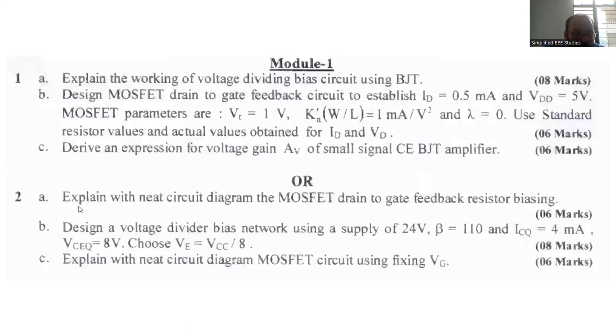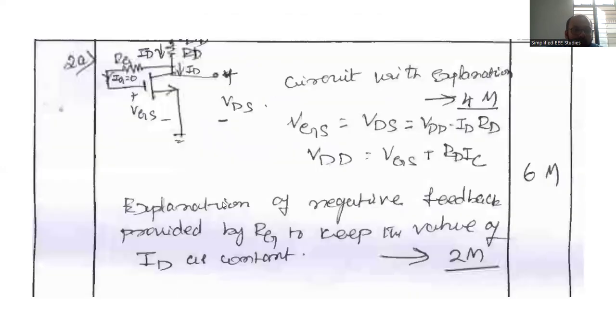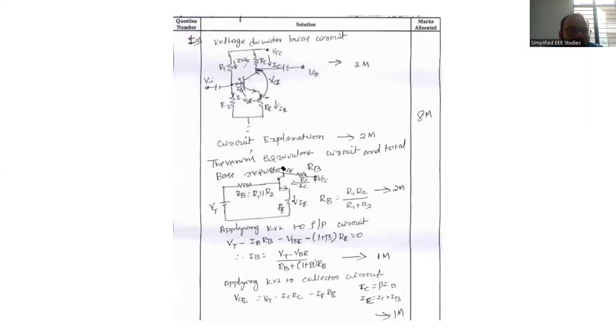Then another option, we have option also. Question 2A: Explain the need and circuit diagram for MOSFET drain-to-gate feedback biasing. This is also one of the simple questions. For that purpose we require the diagram. Then write down the formula, these two formulas. And explain why this biasing is required. Explanation of the negative feedback provided by RG to keep the value of ID constant, just like a current limiting resistor R. MOSFET is a voltage control device whereas BJT is a current control device. Point that out.